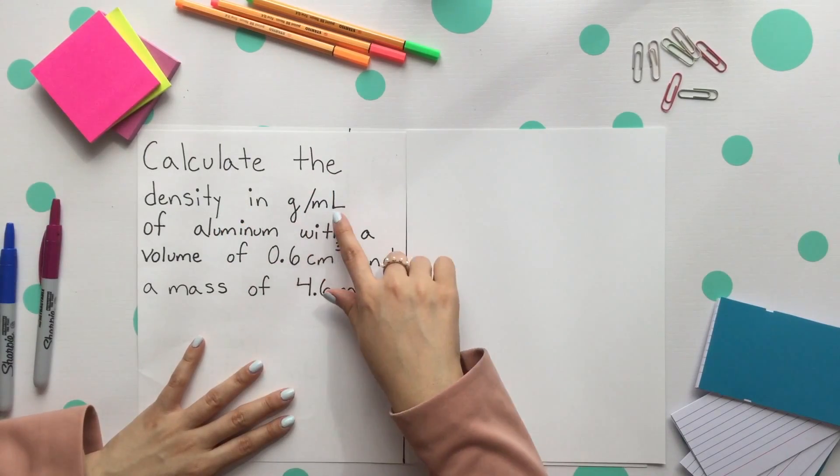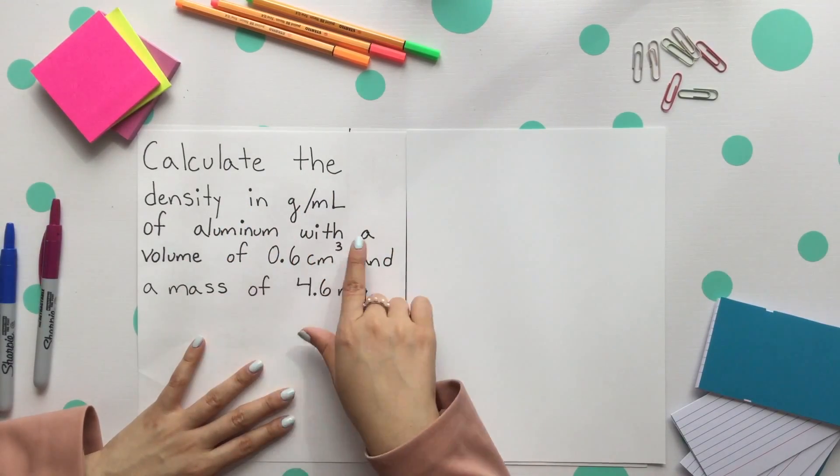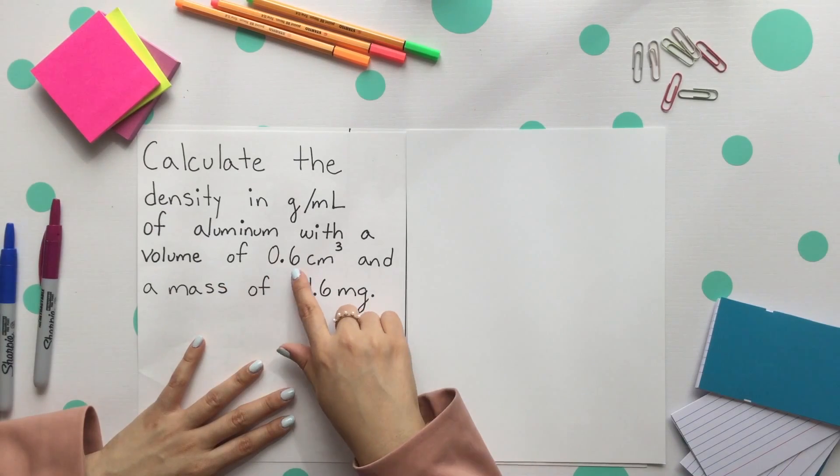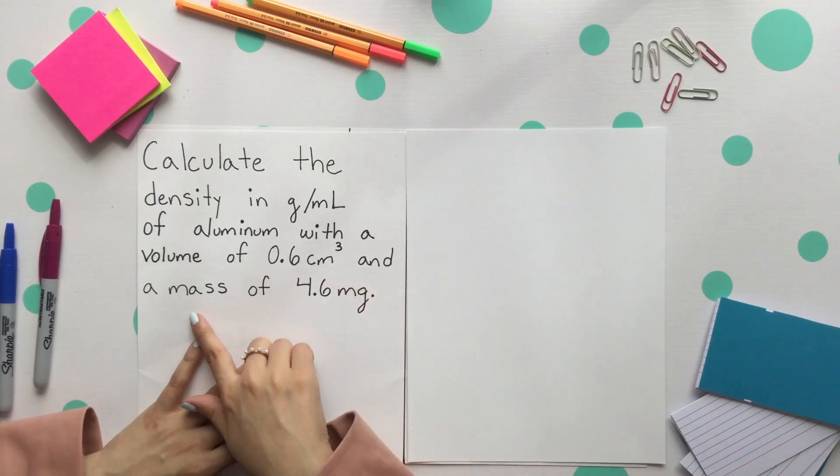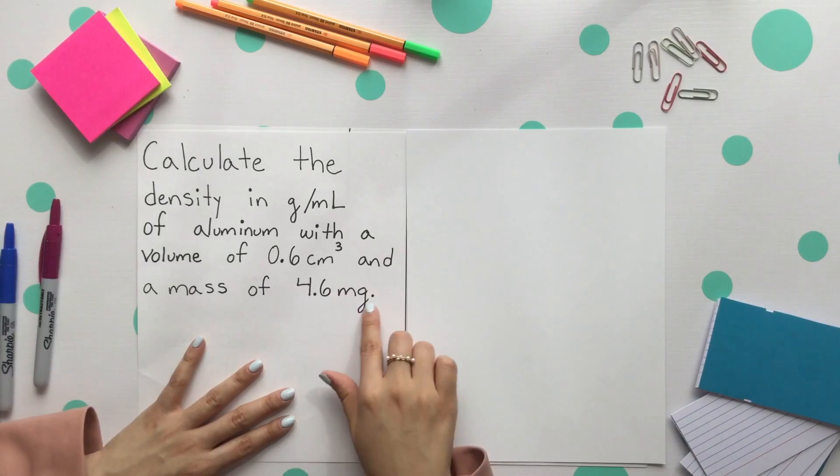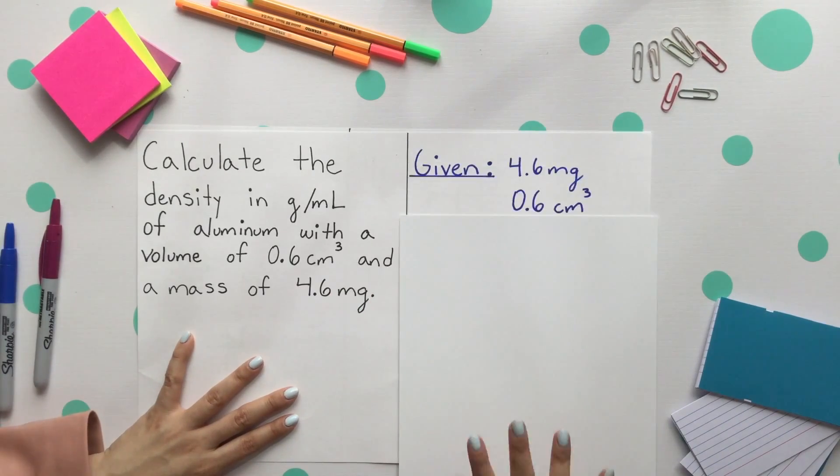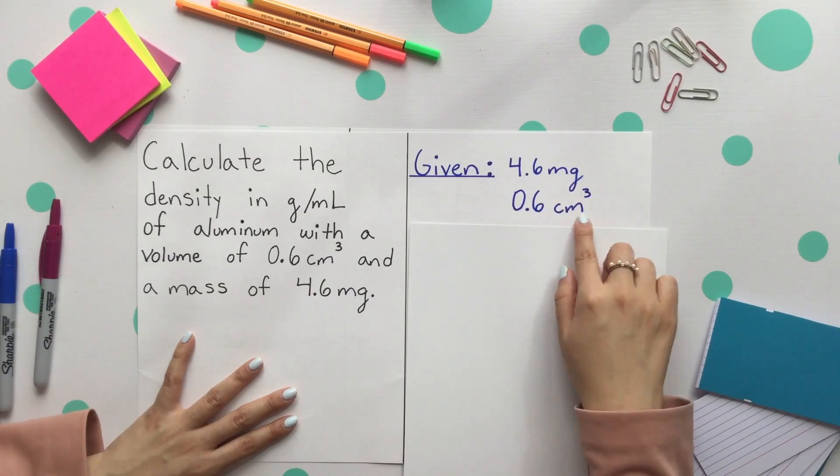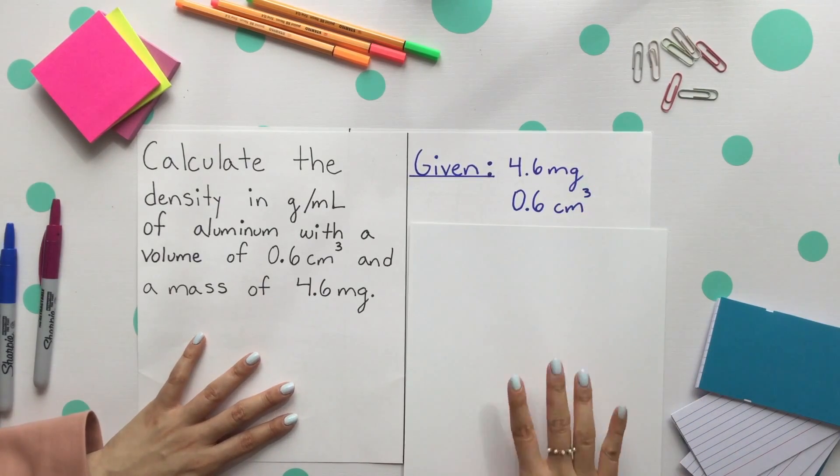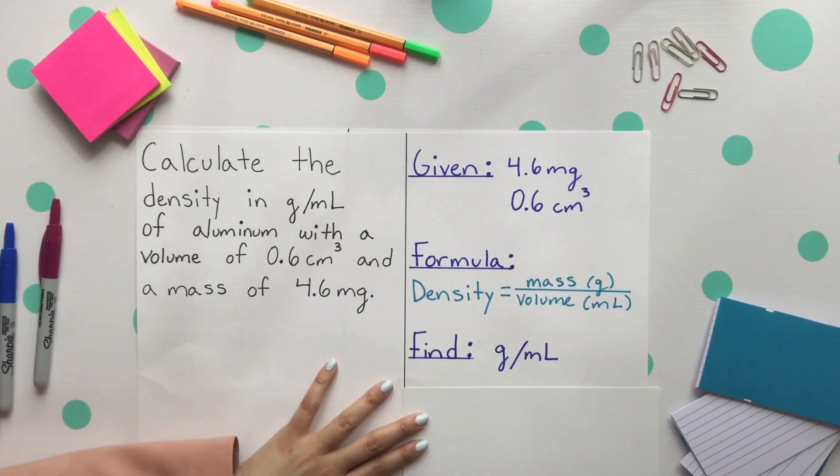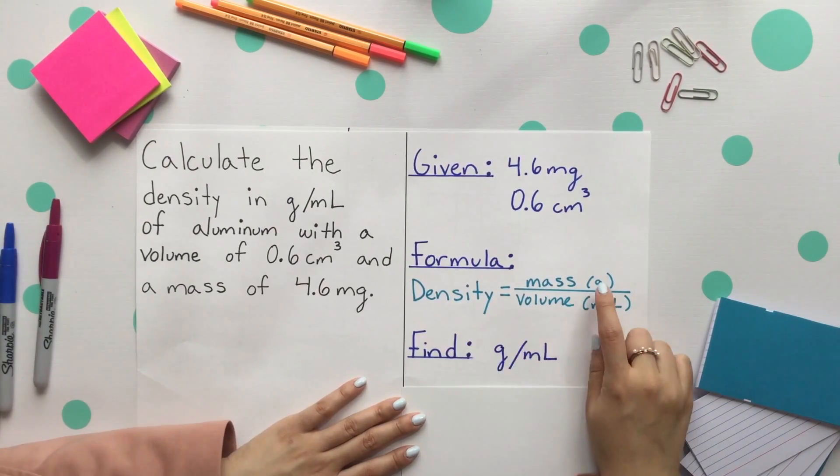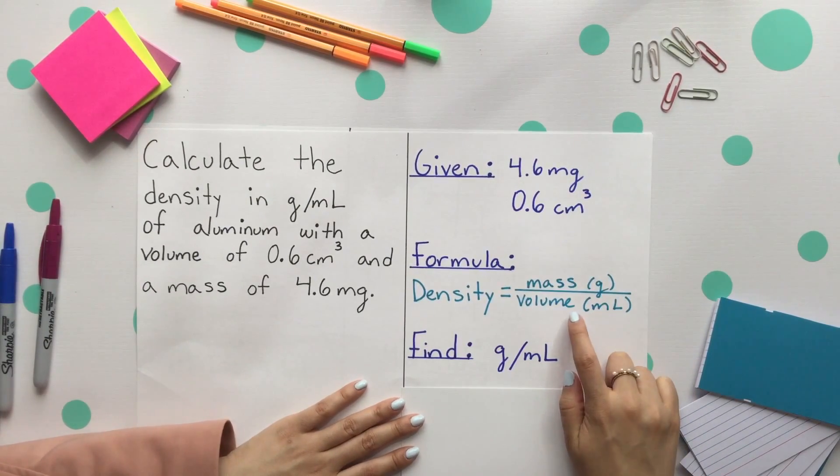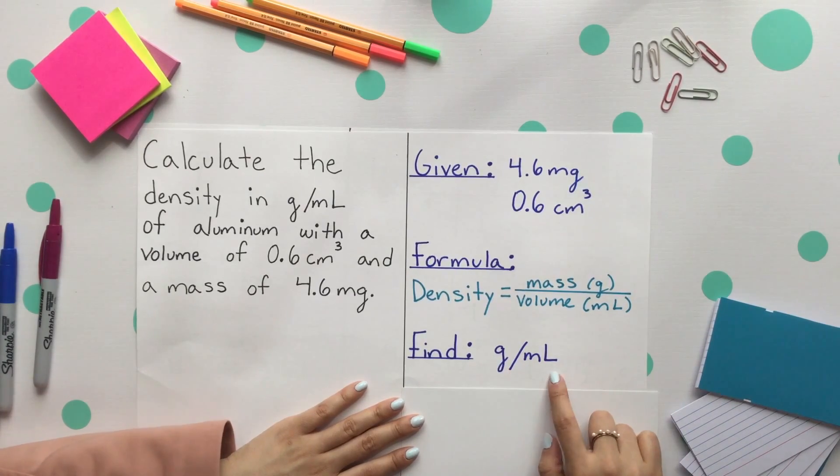Let's calculate density. Calculate the density in grams per milliliter of aluminum with a volume of 0.6 cubic centimeters and a mass of 4.6 milligrams. You're going to have two different givens: we have the 4.6 milligrams and 0.6 cubic centimeters. Since we are solving for density, we have a formula for that. Our mass divided by our volume, but specifically we want the unit to be grams per milliliter.